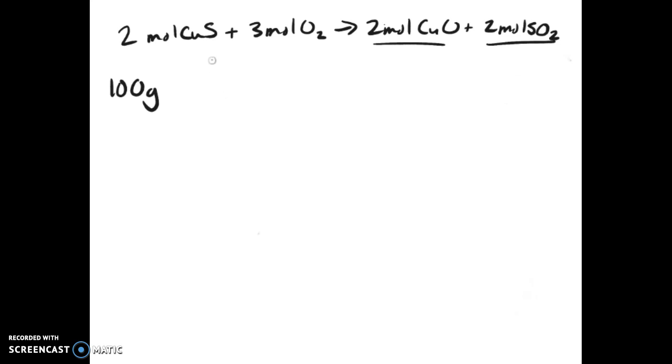So let's start with the 100 grams of cupric sulfide. I've already determined the molar mass so I'm not going to do that calculation just to save some time. There are two moles of cupric sulfide and it's 95.61 grams per mole.